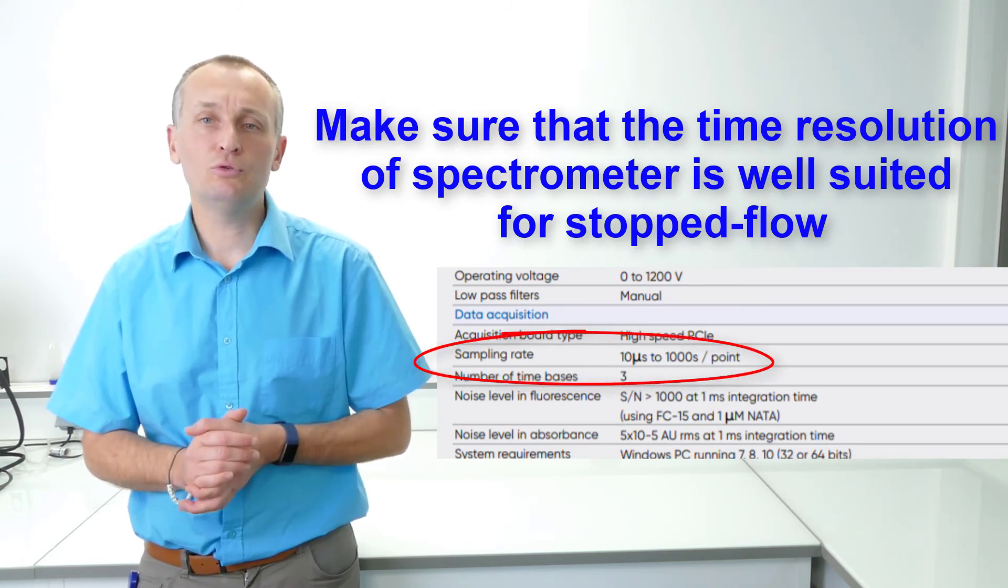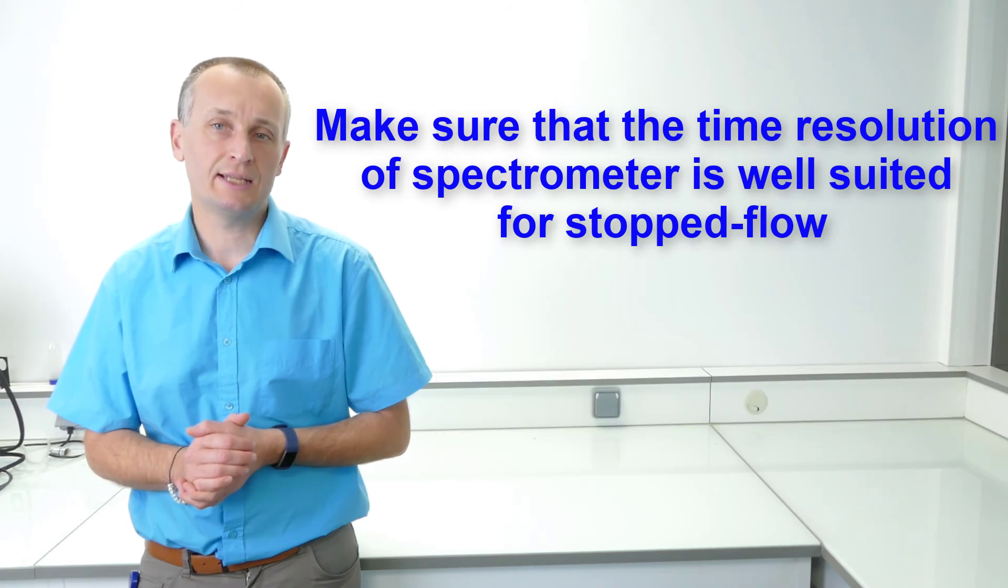For example, if your stop flow has a 0.2 ms dead time, but you collect data every 10 ms, then the effective dead time will be 10 ms.